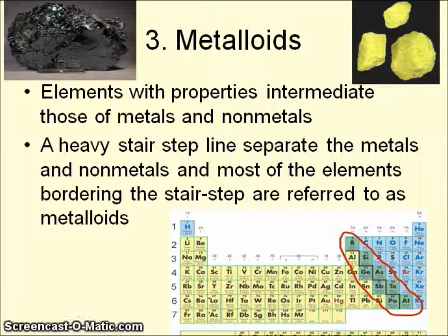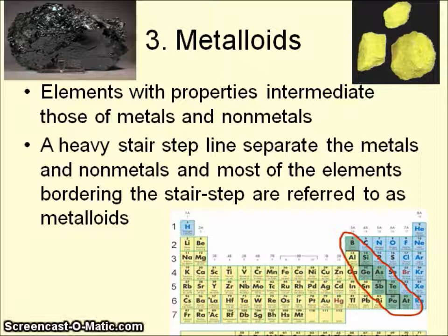The third group are called the metalloids. These are elements that have properties halfway between metals and non-metals. They are the elements that touch the stair-step line, with one exception — aluminum, which is a metal, not a metalloid. The heavy stair-step line separates the metals from the non-metals, and most elements bordering that stair-step are referred to as metalloids, having some properties of each group.